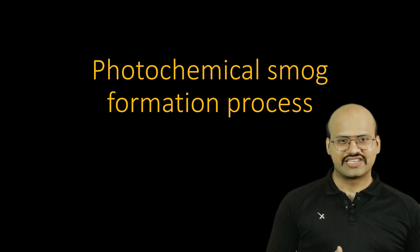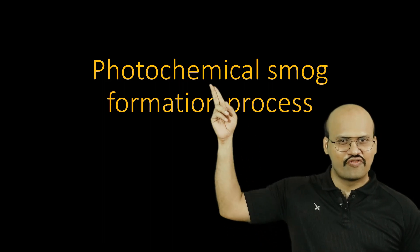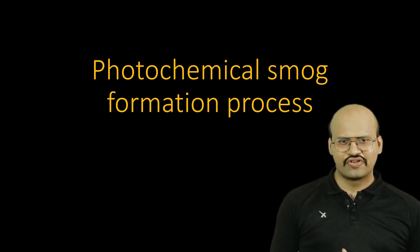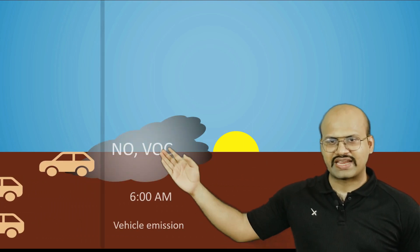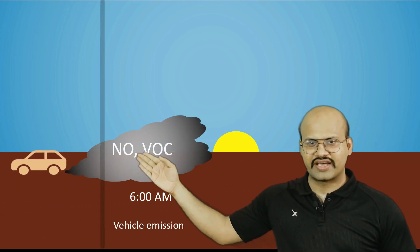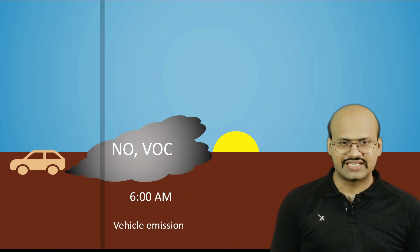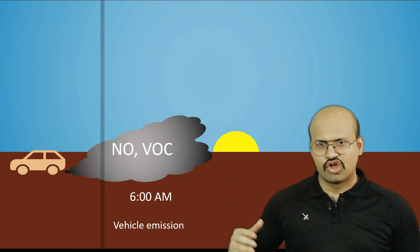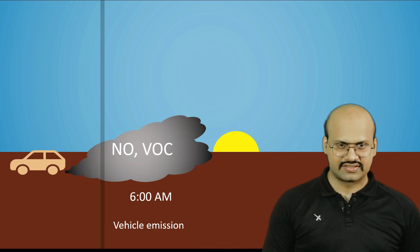Now let's see the process of formation of photochemical smog. In the morning there is a lot of vehicular traffic. These vehicles emit primary pollutants like nitrogen oxide and volatile organic compounds. So we see that in the morning the concentration of these two pollutants increases.